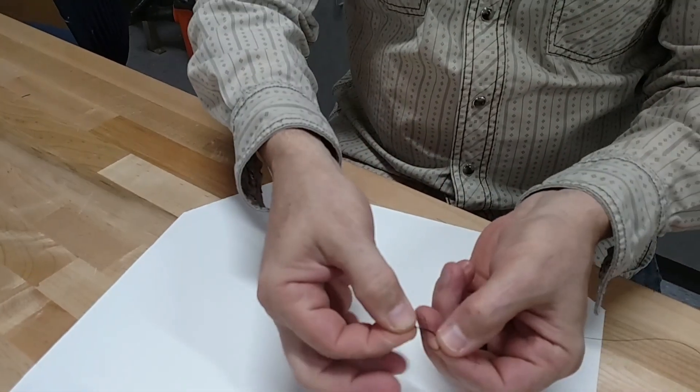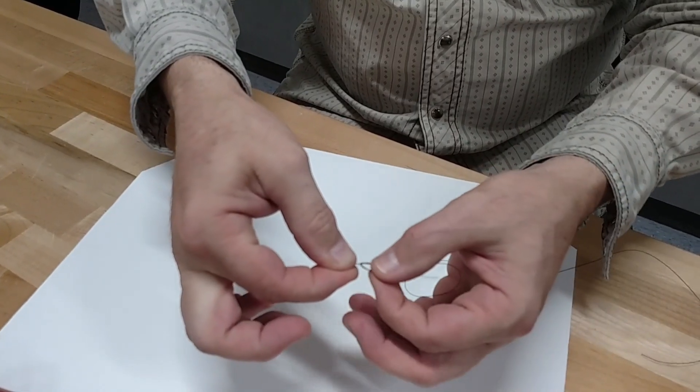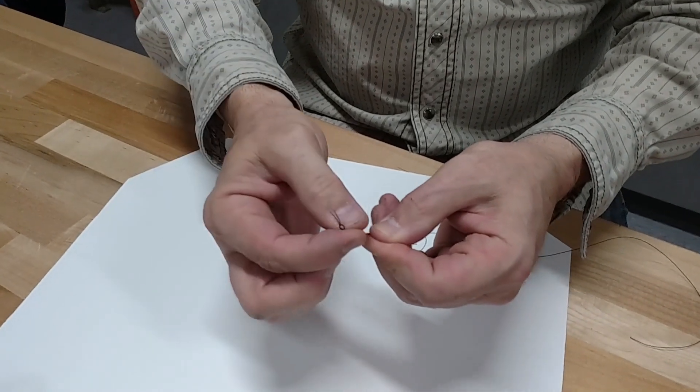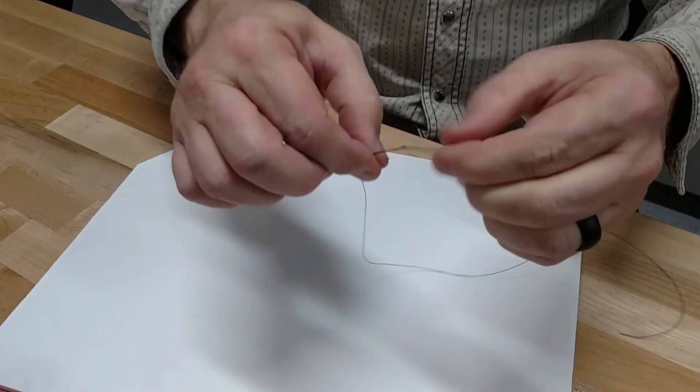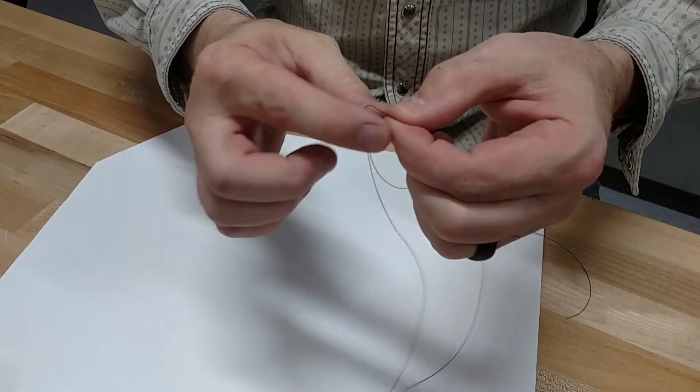You see I have a knot there. I'm just going to pull this through. Make sure that I have enough of a loop on the end. When I pull it tight I have a little knot right there. You'll see that I've got a loop.